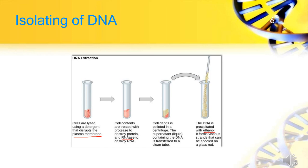Isolating DNA: a nucleic acid enclosed within the nucleus. Isolation of DNA is not an easy task — it is an enzymatically controlled process where plants and animals are treated with enzymes. Cells are lysed using a detergent to disrupt the plasma membrane. Cell contents are treated with protease to destroy protein and RNase to destroy RNA. Cell debris is pelleted in a centrifuge, and the supernatant containing DNA is transferred to a clean tube. The DNA is then precipitated with ethanol, forming viscous strands that can be spooled on a glass rod.